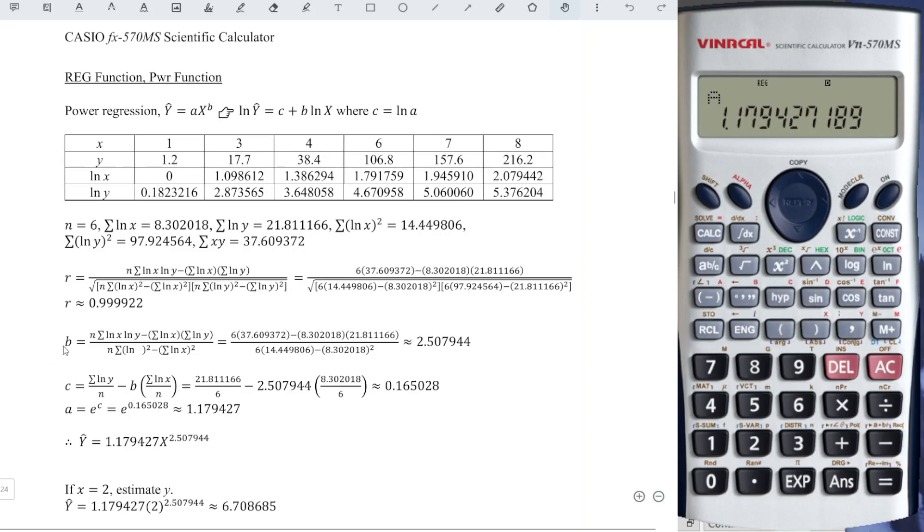After we already obtained the value of B and A, then of course we are able to form the power regression. We just have to substitute and we obtain the regression.